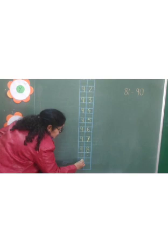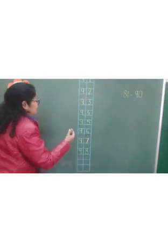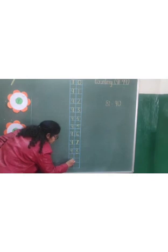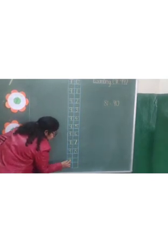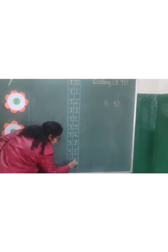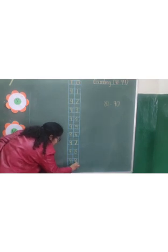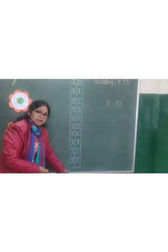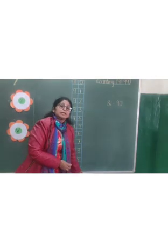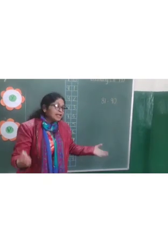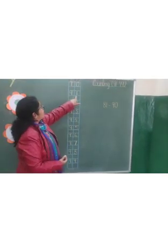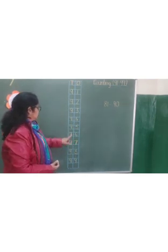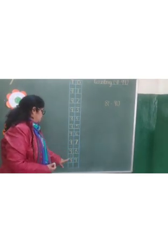Which number will come after 98? After 98 comes 99. 9 tens and 9 ones — 99. After 99 comes 100. Now let's read the counting: 91, 92, 93, 94, 95, 96, 97, 98, 99.